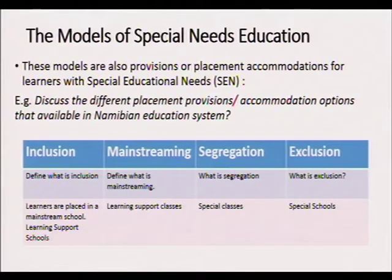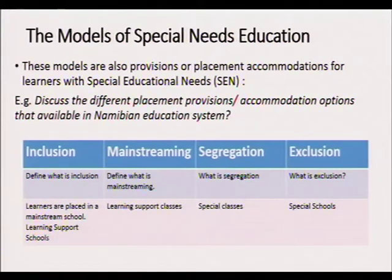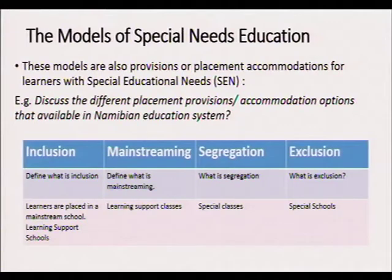These are also concepts and definitions in special needs education that you need to know. Looking at the first one — inclusion — you need to define what inclusion is, and then you need to know what kind of placement inclusion entails. For example, if a question says discuss the different placement provisions or accommodation options available in the Namibian education system, then you need to know that inclusion means learners are in a mainstream school, placed either in a mainstream grade or in a learning support class.